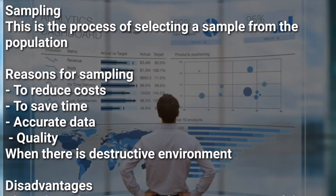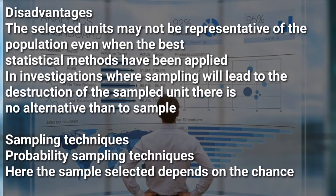Now let's look at the reasons for sampling — why do people use samples instead of studying the whole population? First, it reduces costs, because studying the whole population can be expensive. Second, it saves time — studying the population of the whole of Uganda would take more time than studying only the people in Kampala. Third, it allows for accurate data — when something is small you can more easily get accurate data. Fourth, quality — using a sample allows you to get better quality data than studying the whole population.